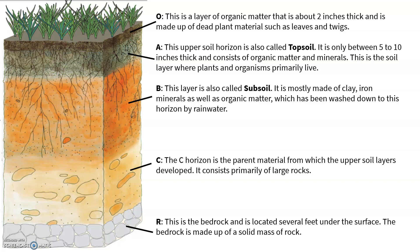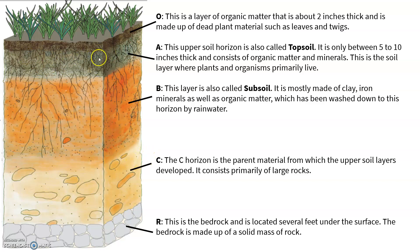The O layer contains all the living things, anything that's starting to decay, or in some step of decomposition. The A layer — the topsoil — is all the stuff underneath that. Once things have decomposed, it holds all the nutrients they provided. There's a lot of organic matter and a lot of minerals here. This is also where we see most of the roots, and things that live in the soil typically live here, because this soil is really rich. Underneath that, the B layer is the subsoil — a much lighter layer with the most clay and iron materials, some organic matter if it gets washed down by rainwater, but not a lot. Some roots will reach this far down, but typically most roots stop in the topsoil layer.